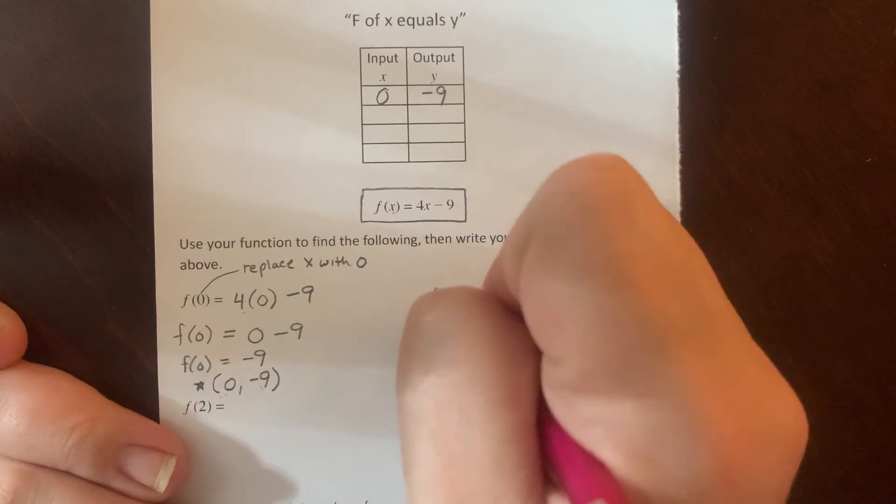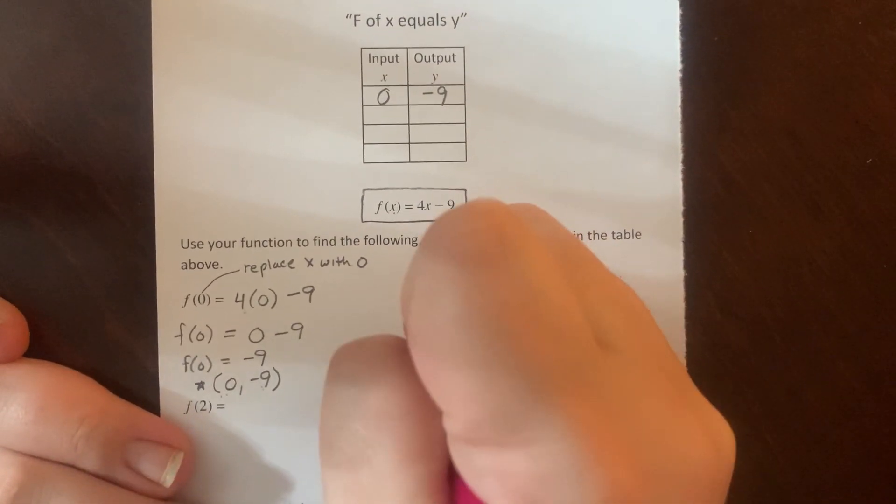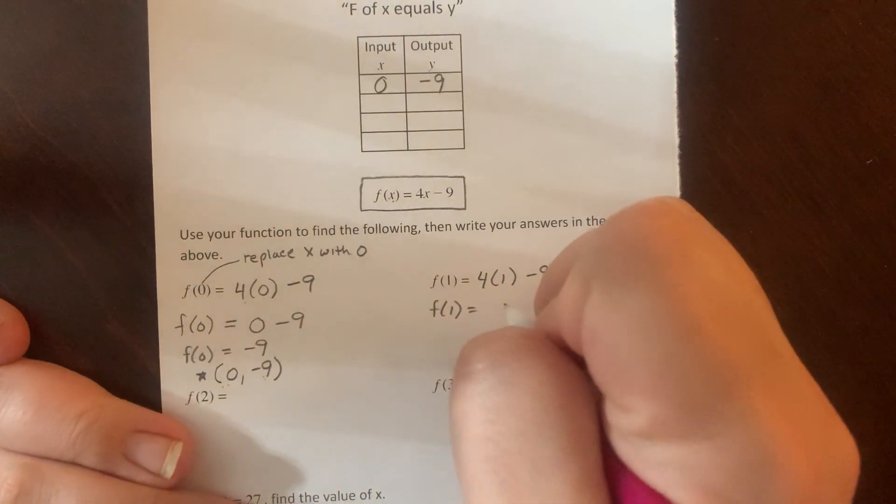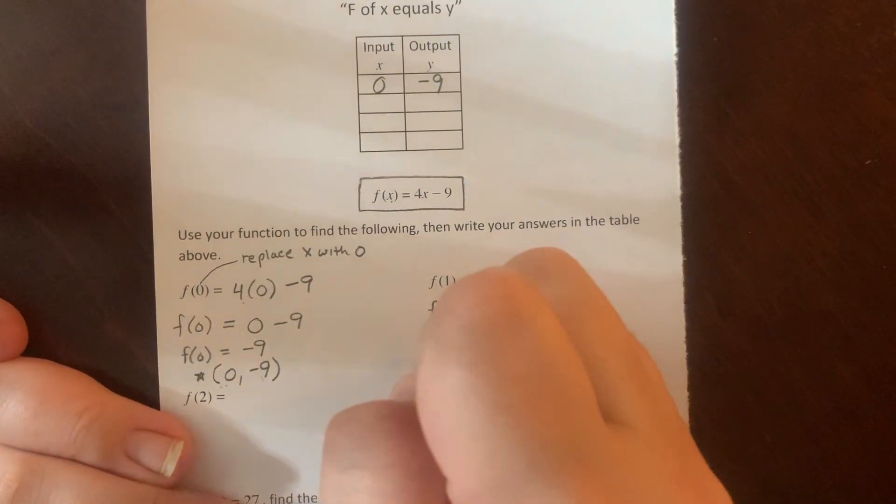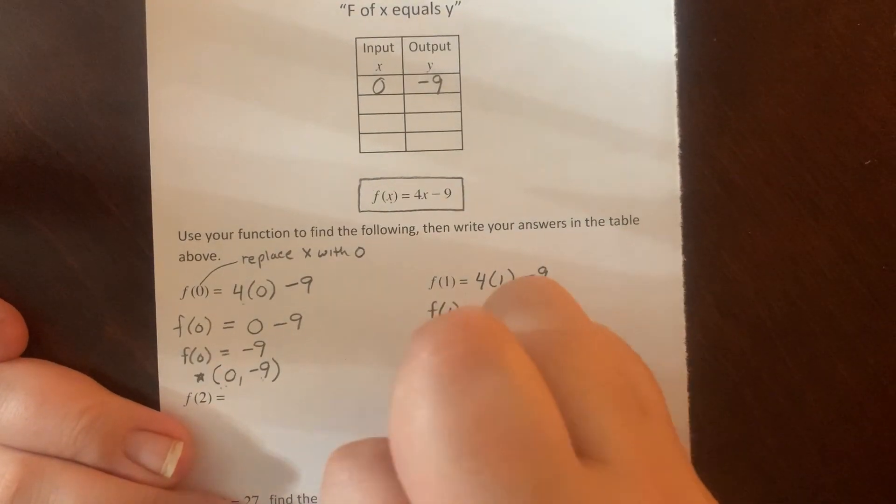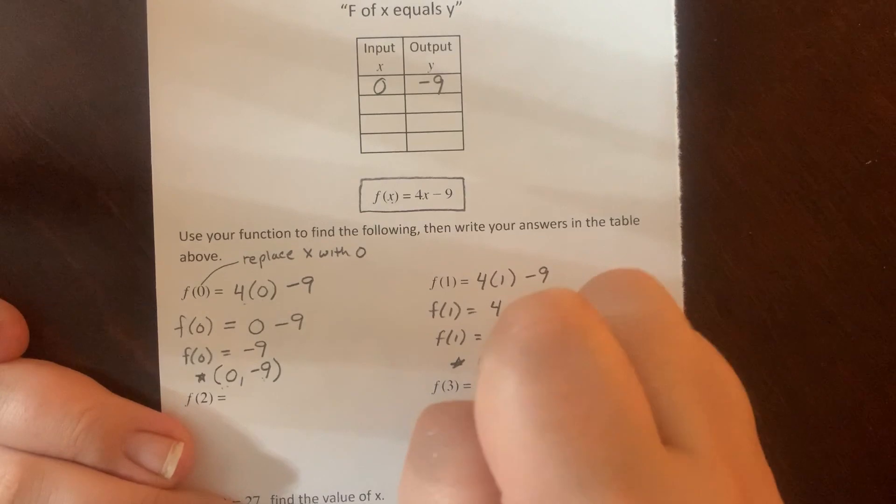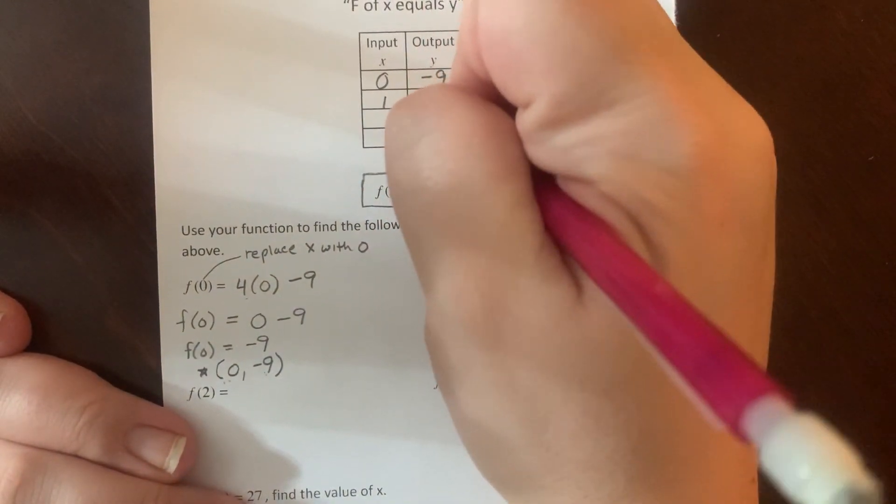All right, F of 1. I'm going to replace the X with a 1, so 4 parentheses 1 minus 9. I'm going to bring down my F of 1 to keep the notation. F of 1 equals 4 times 1, which is 4 minus 9. F of 1 equals 4 minus 9, which is negative 5. So to write my ordered pair, when X is 1, Y is negative 5. I'm going to go up to the table and fill that in. 1 negative 5.